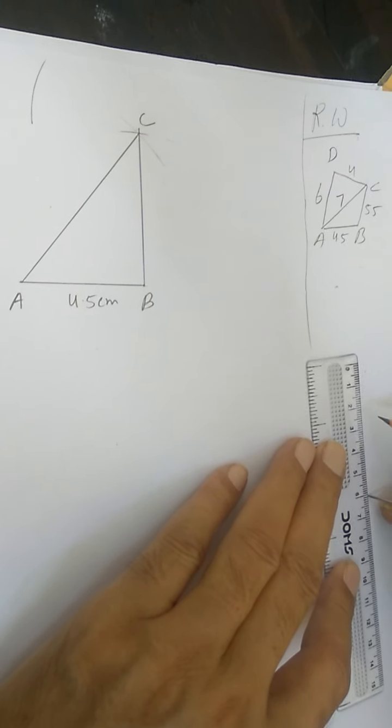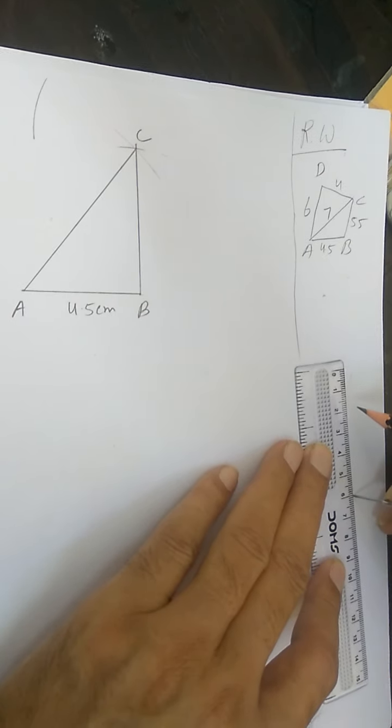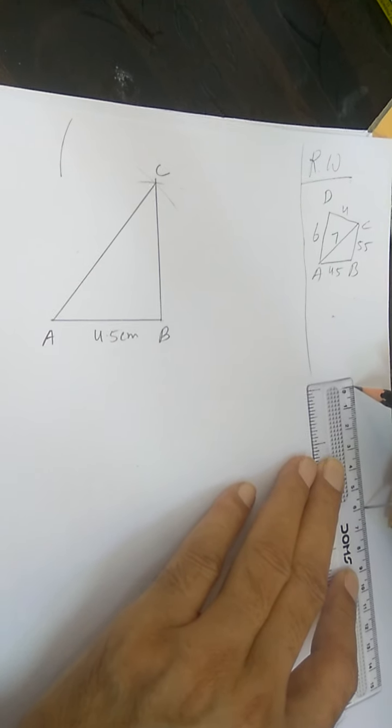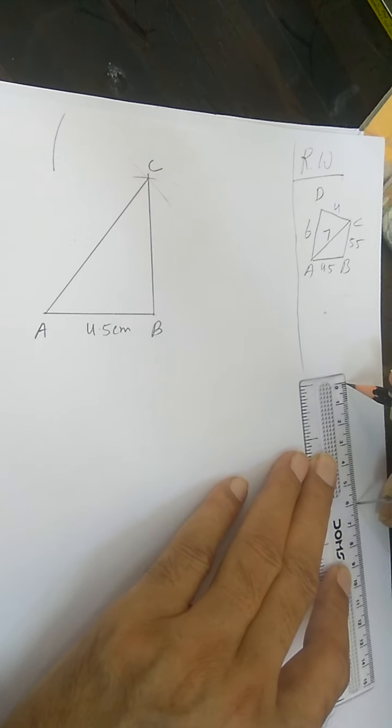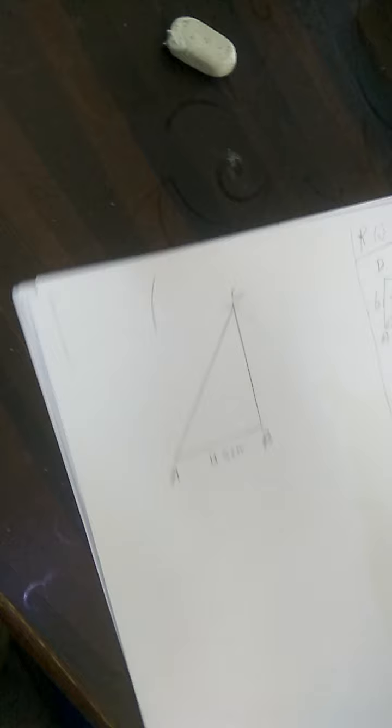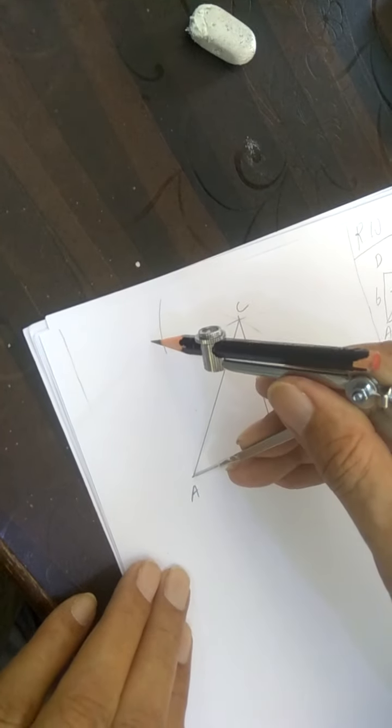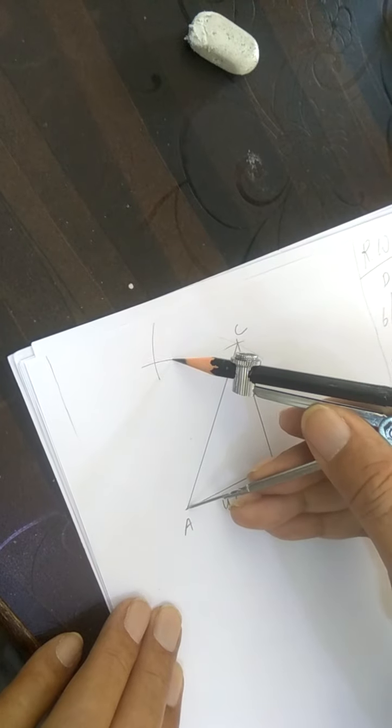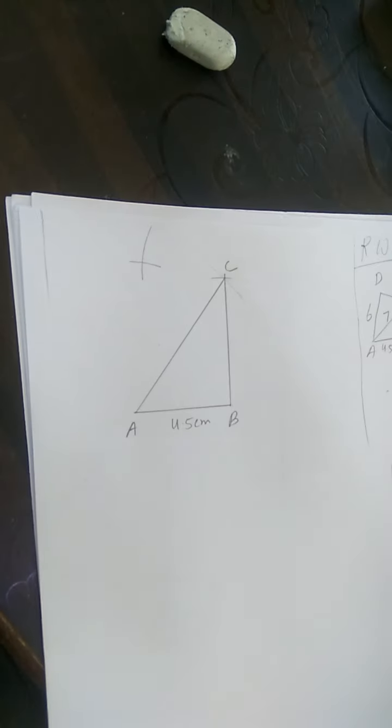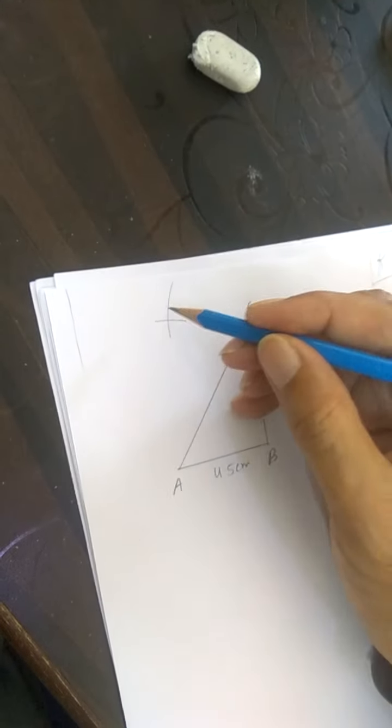Let's take the measure of 6 first. This is 6. Let's draw AD now. To get point D, these two have to intersect. Now this is your point D.